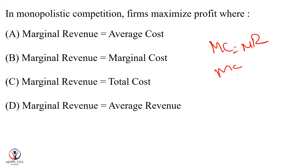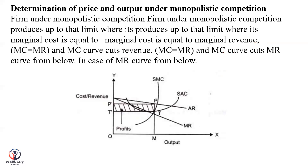When these conditions are satisfied, the firm reaches equilibrium and price and output determination is efficient. So upon your question — in monopolistic competition the firm maximizes profit where marginal cost is equal to marginal revenue. That is the right answer. MC should cut MR from below — MC equals MR is the equilibrium condition.